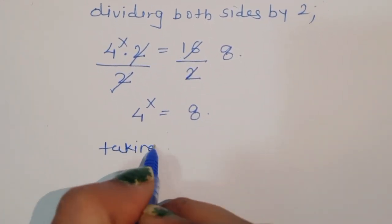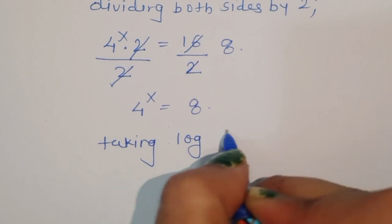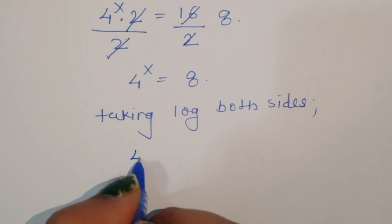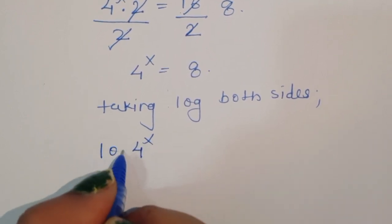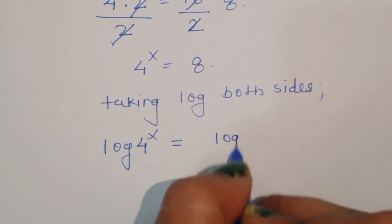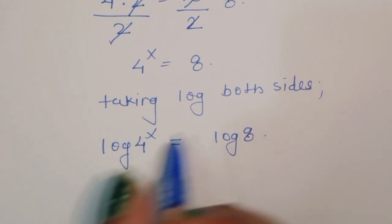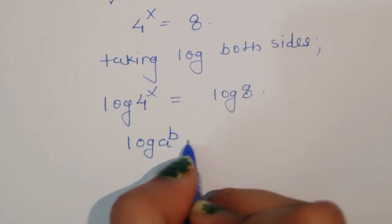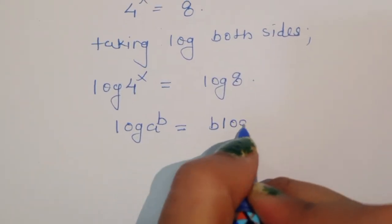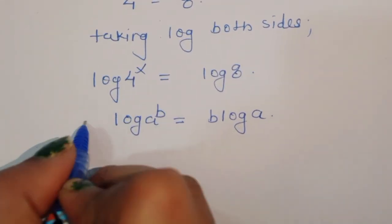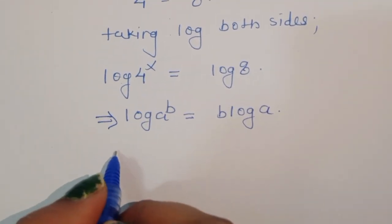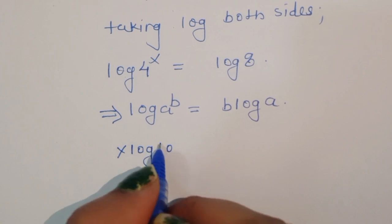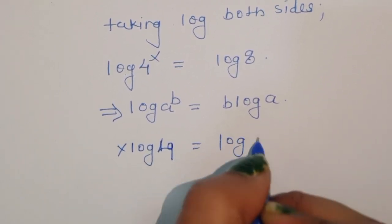Now, taking log on both sides, we get log of 4 power x is equal to log of 8. We know the formula: log of a power b is equal to b times log a. Using this formula, we get x times log of 4 is equal to log of 8.